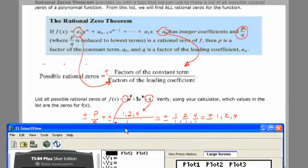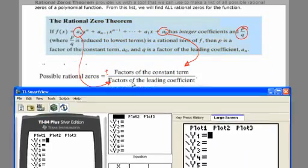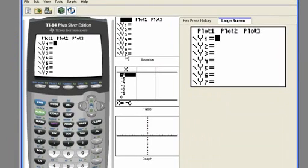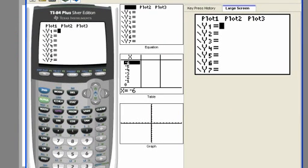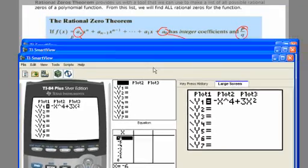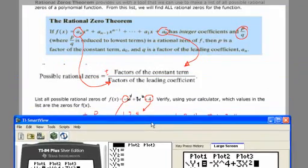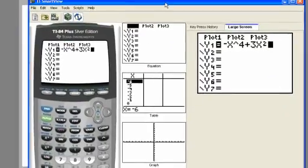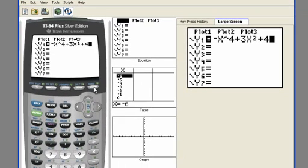Negative x to the 4th plus 3x squared plus 4. And let's graph it.